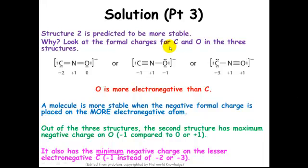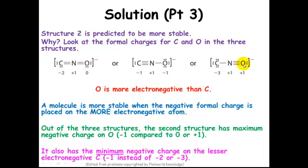So let's look at the formal charges for the carbon and the oxygen. Notice that the nitrogen is the same in all of them, so we're just going to look at the carbon and the oxygen. In this first structure, oxygen is the most electronegative, and it has a formal charge of zero. Carbon is less electronegative, and it has a formal charge of minus two. So that doesn't follow our rule that we want to put the negative formal charge on the most electronegative element. Let's also look at structure three: we actually have oxygen with a positive formal charge, and it's the most electronegative atom in this molecule, so that definitely isn't right.